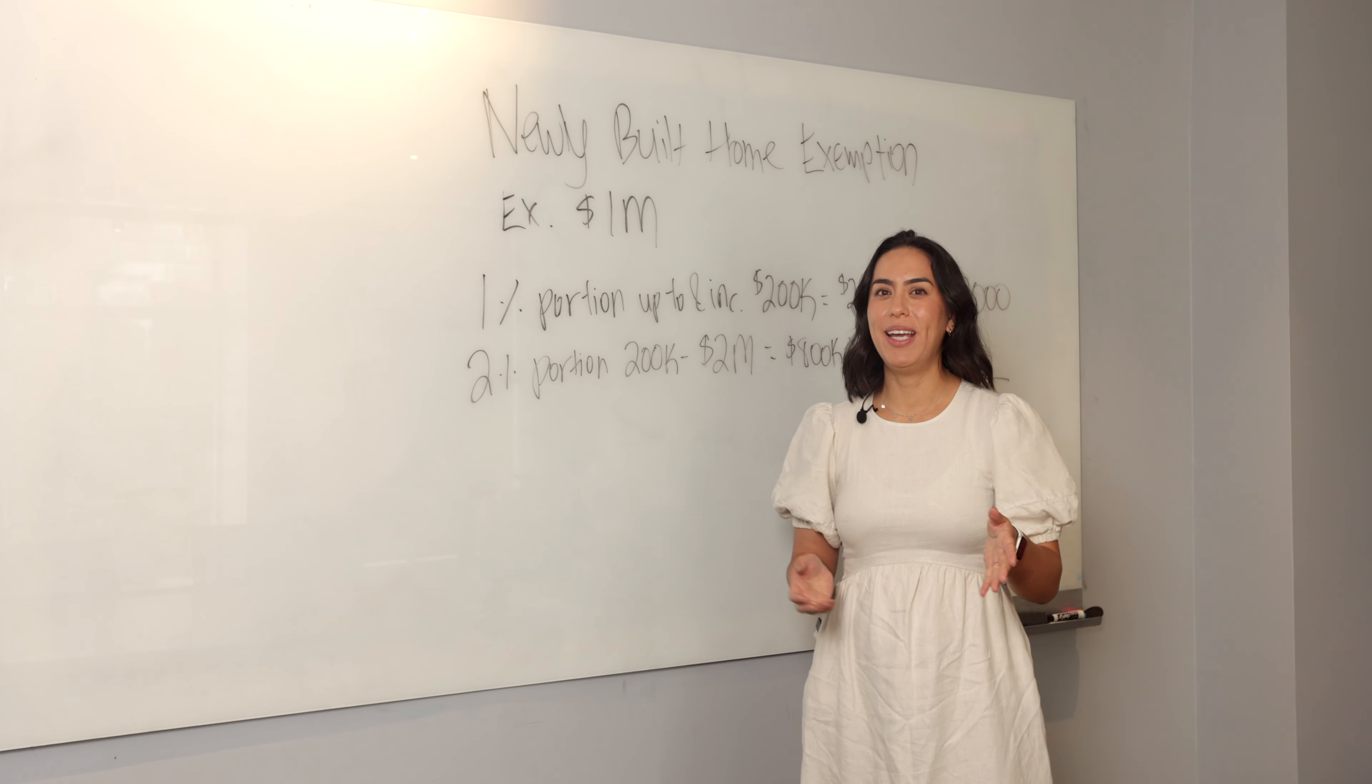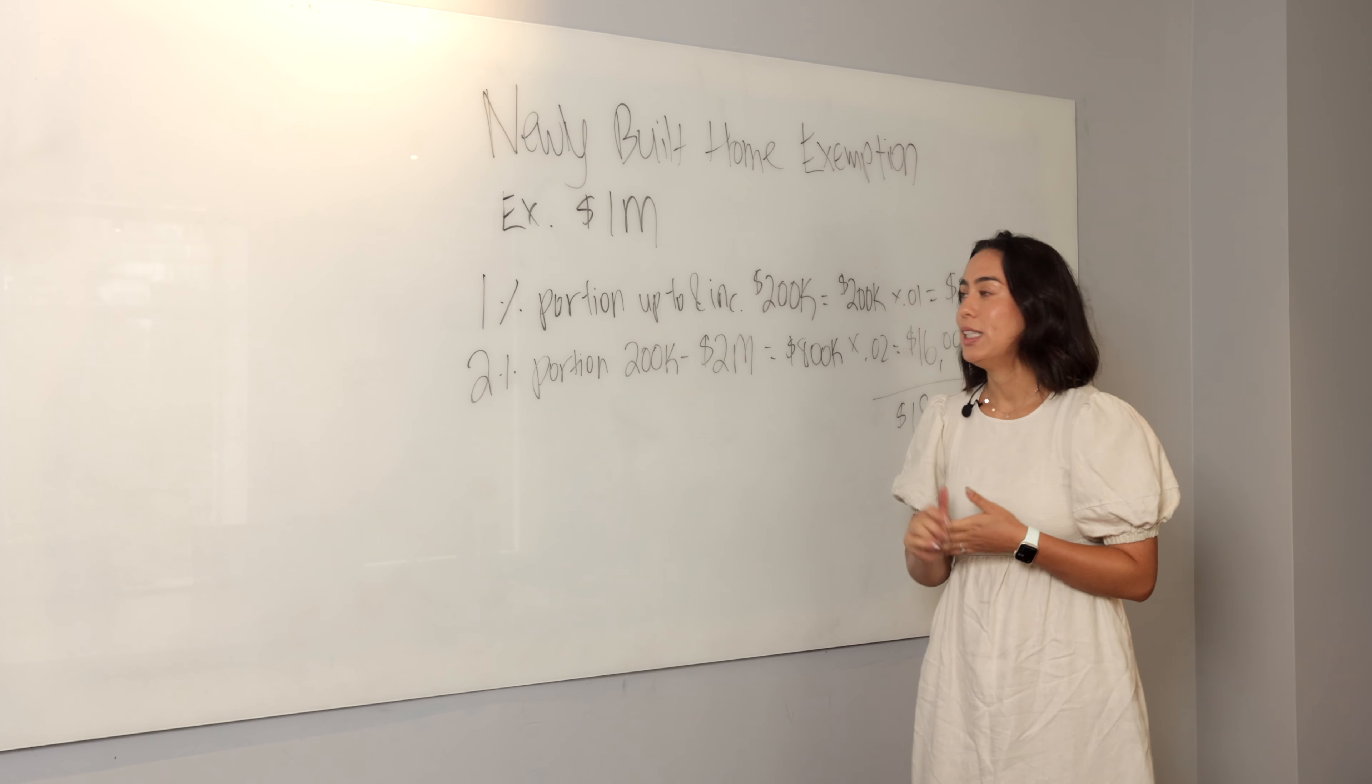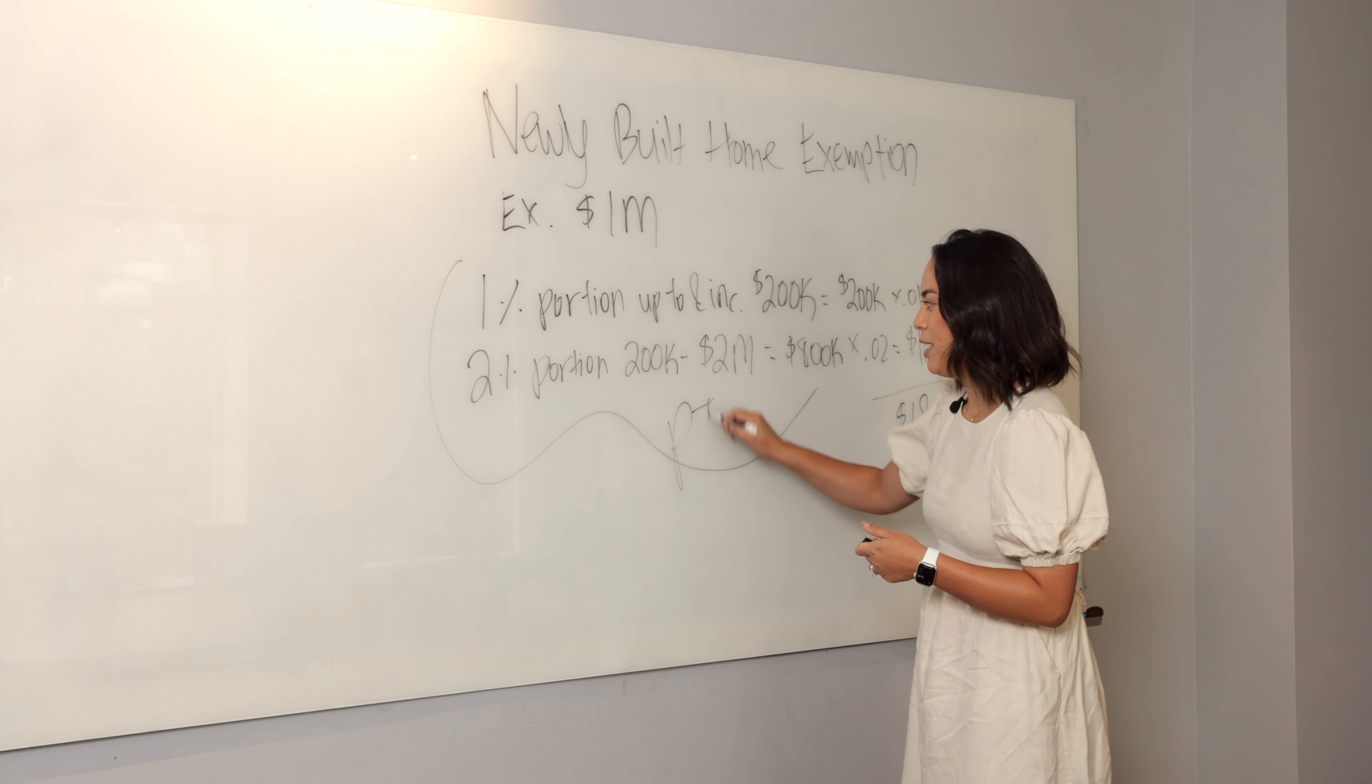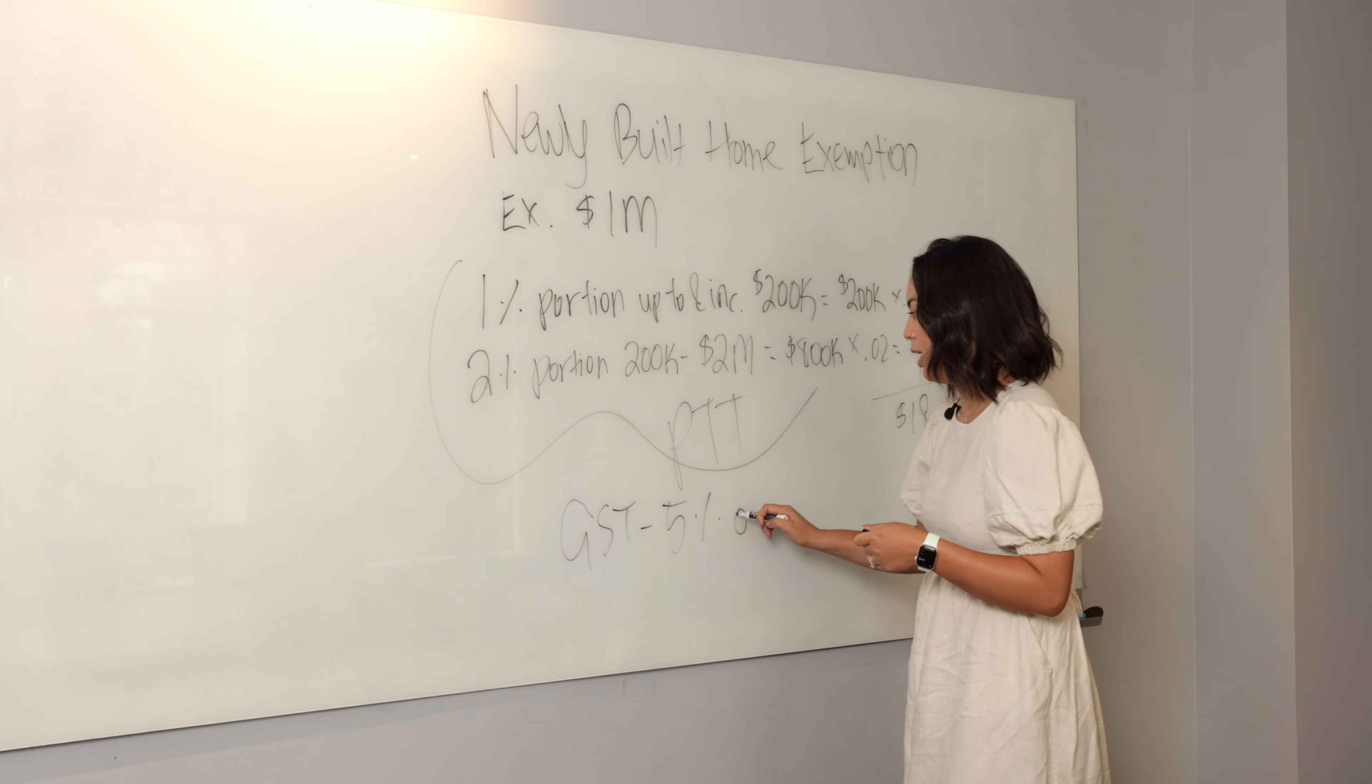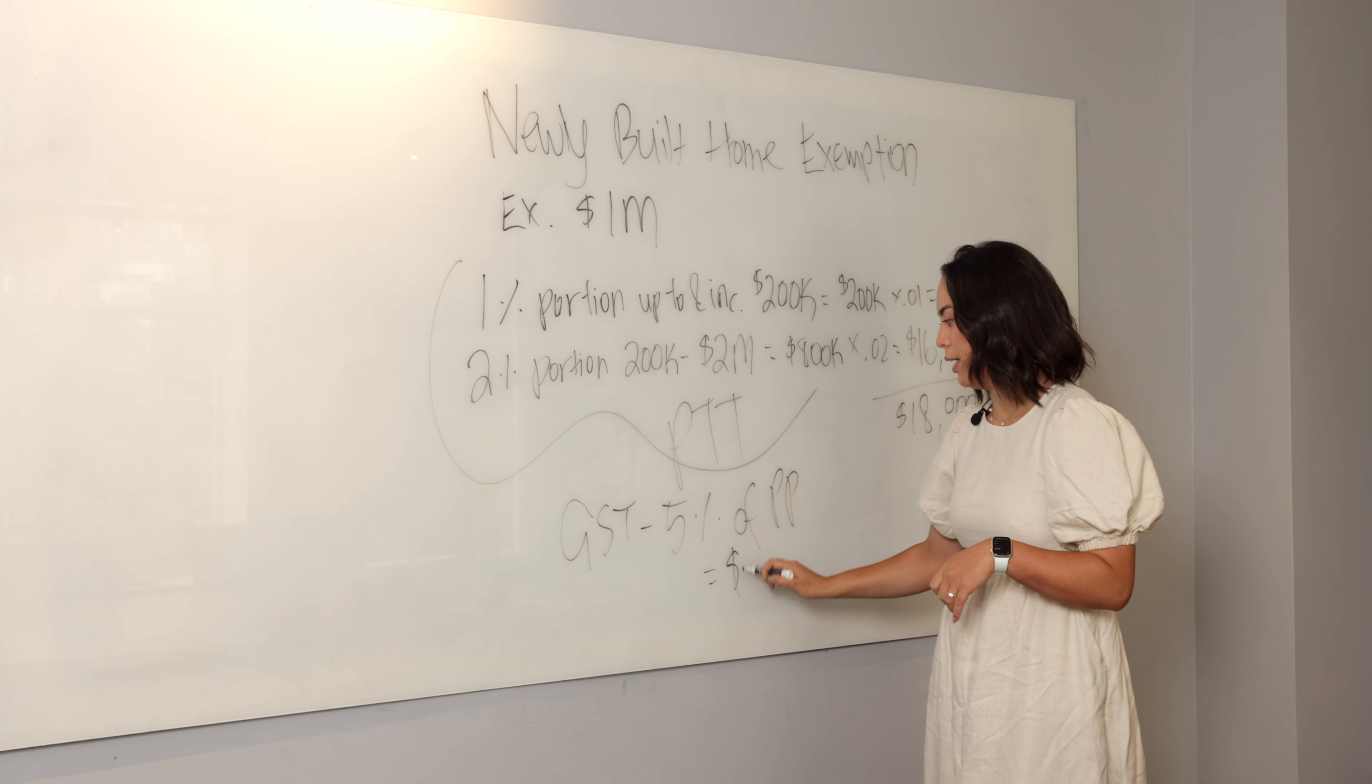Just keep in mind that with newly built homes or pre-sales, they're also subject to GST. This video is just about property transfer tax, but I do want you to be aware that if you are purchasing this type of home, it's very likely that you are going to be paying GST. That GST is 5%. This here is PTT, as we call it, property transfer tax. GST, just as a quick tip, is 5% of that purchase price, fair market value. So in this example of a million dollars, 5% times a million is $50,000.